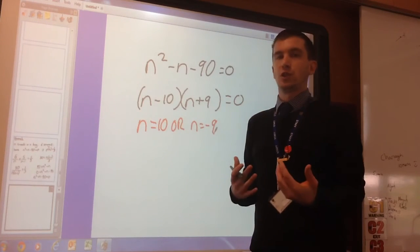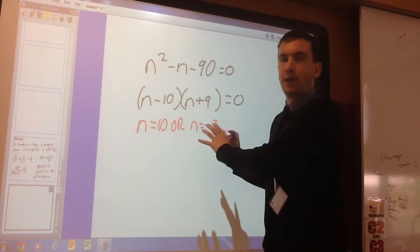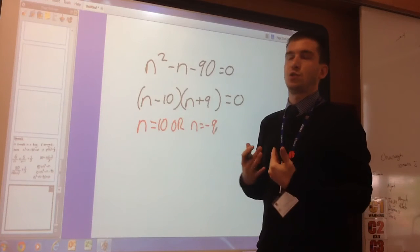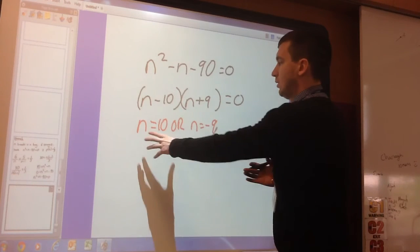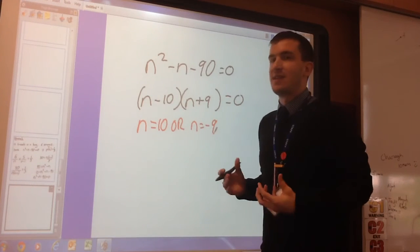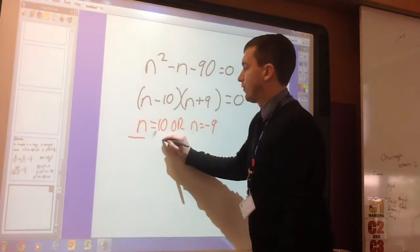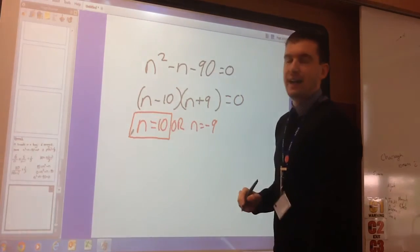A lot of people are saying, what's the sweets got to do with anything? This is the point where the bit about the sweets become relevant. Because it asks for the total of sweets in the bag. Well, you can't have negative 9 sweets in a bag. So the answer that they were looking for would have been N equals 10.